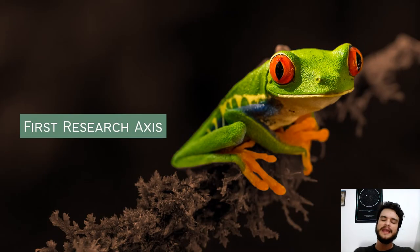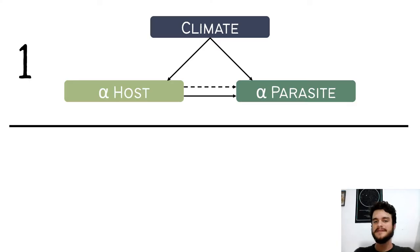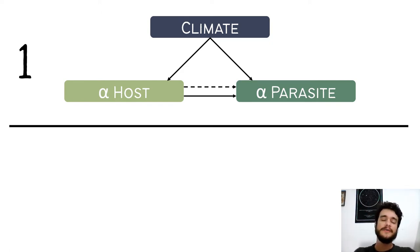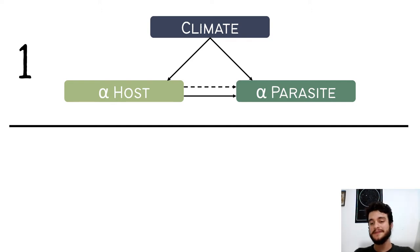We followed two main research axes. The first was focused on understanding parasite alpha diversity, more specifically the direct and indirect effects of climate on parasite alpha diversity. Both climate and host alpha diversity are important predictors of parasite richness at broad scales, but they are normally treated separately. However, there is an interaction between those two variables, so ignoring it can lead us to wrong conclusions about what drives parasite alpha diversity at broad scales.